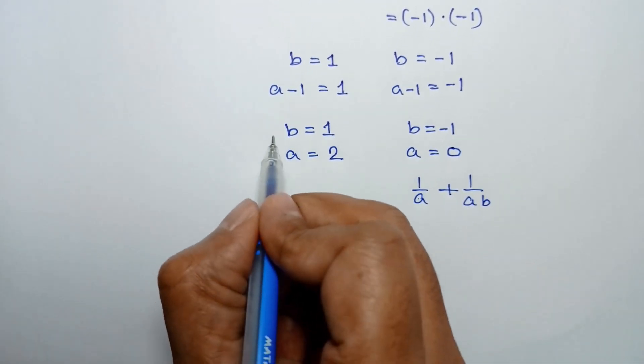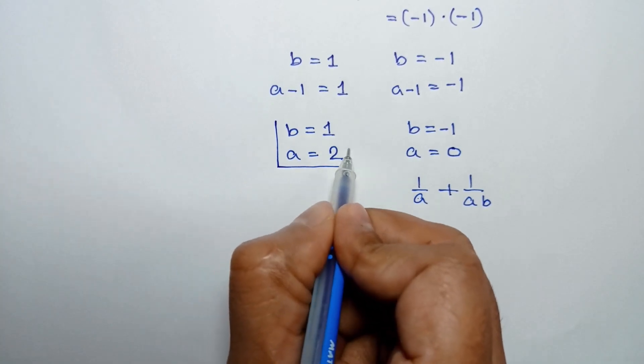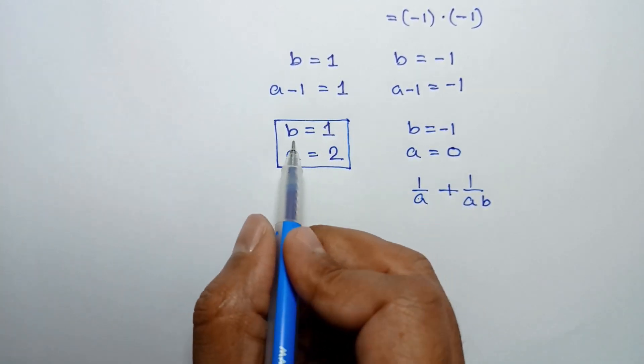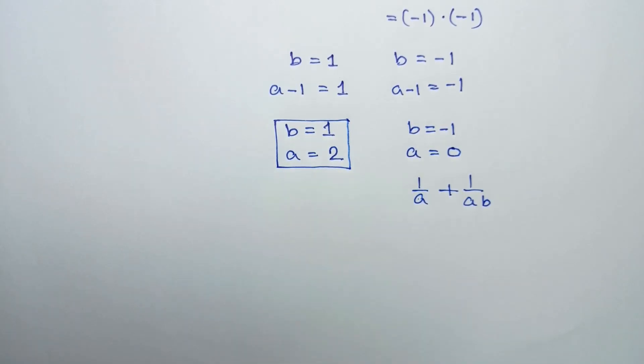So the only integer solution of this equation is a = 2 and b = 1. If you like this video, please subscribe to my channel. Thank you.